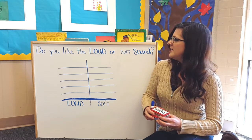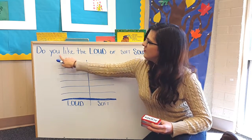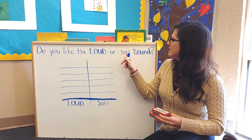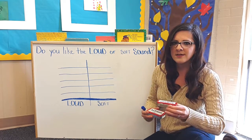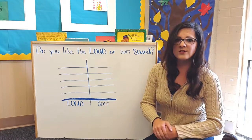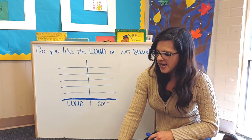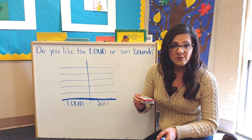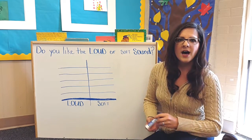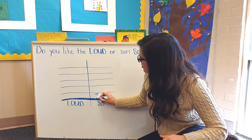What I would do is read my question to the children. I would say, do you like the loud sound or the soft sound? I would ask them specifically by name so that they can answer me in a sentence or with as many words as possible. I would say, John, do you like the loud sound or the soft sound? And he would tell me, I like the soft sound. So I would write his name in the soft column.